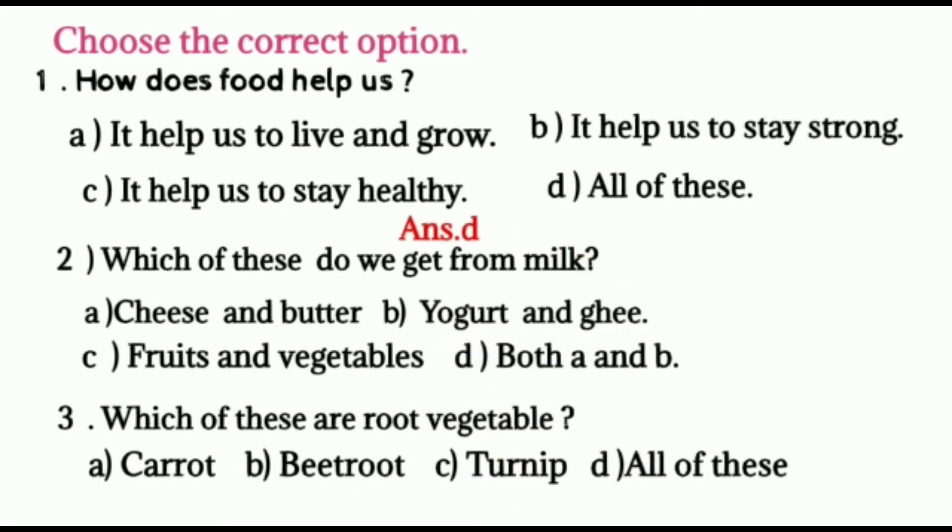Two, which of these do we get from milk. Cheese and butter. Yogurt and ghee. Fruits and vegetables. D. Both A and B. Correct answer is D.